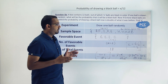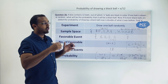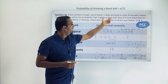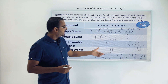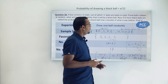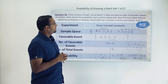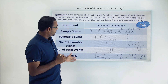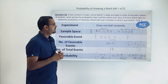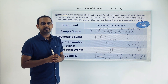Solving the equation gives us x equal to 3. So the number of black balls initially in the box was 3, meaning there were 9 white balls in the box. This is one more very different kind of problem we can solve using the concepts we have studied in probability.